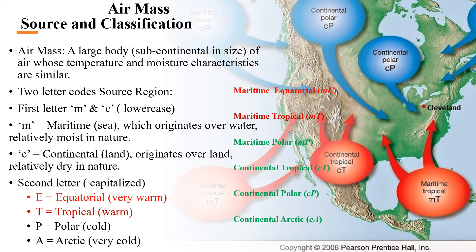As we know, the definition of an air mass is a large body, subcontinental in size, where temperature and moisture content would be somewhat similar in the horizontal direction. Now we'll be talking about the classification and source of air masses.